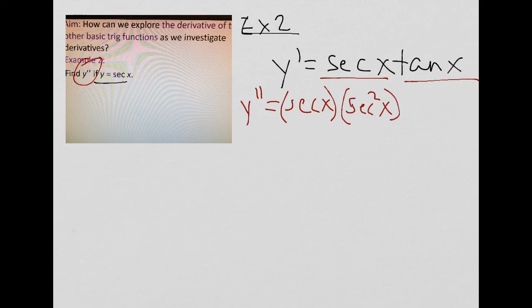So first derivative of the second, which we already did in the last example, secant squared of x, plus second derivative of the first.